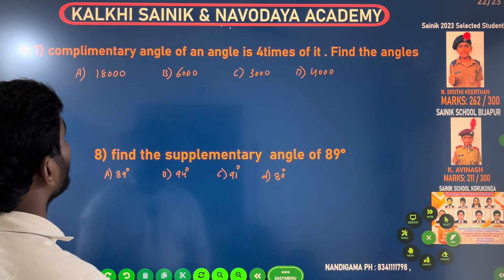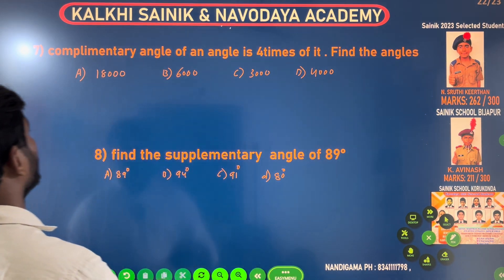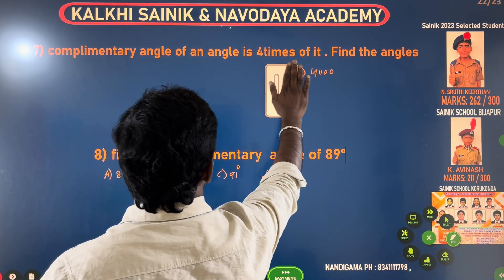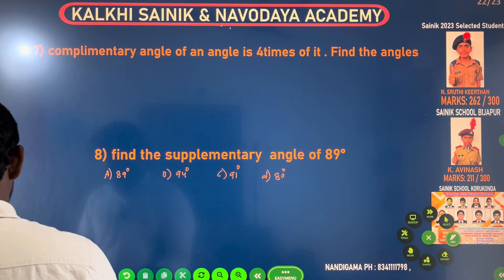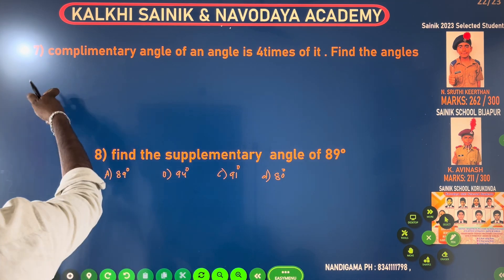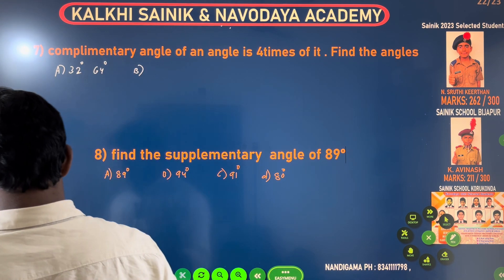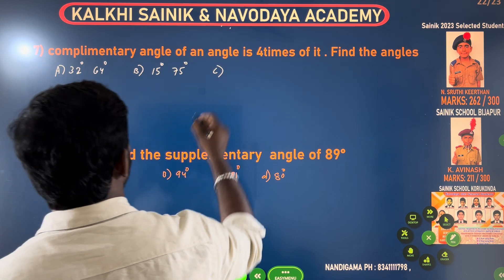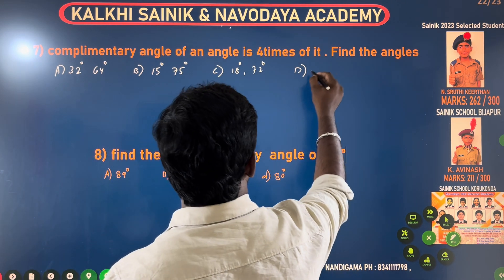The complementary angle of an angle is 4 times of it — find the angle. Options: Option A is 32 and 64 degrees. Option B is 15 and 75 degrees. Option C is 18 and 72 degrees. Option D is 15 and 60 degrees.